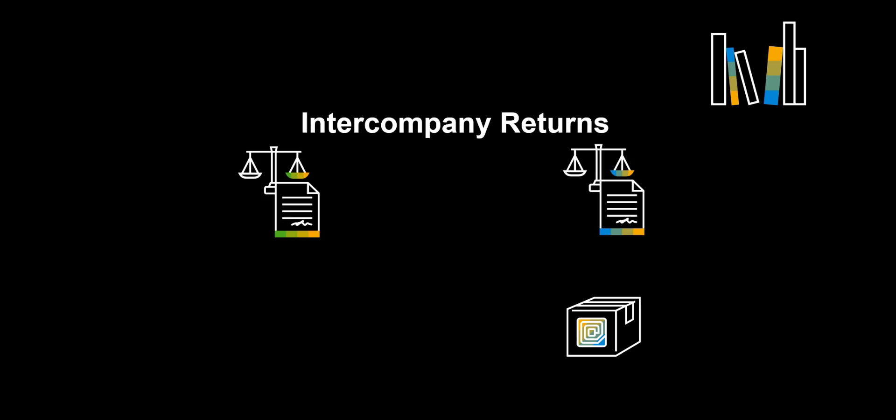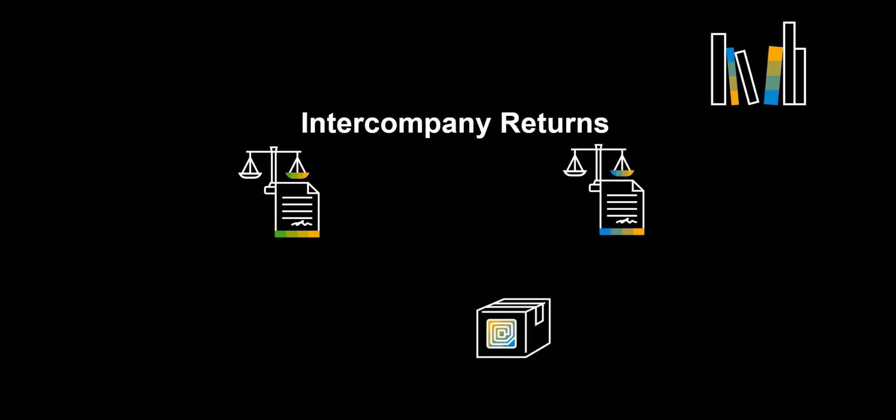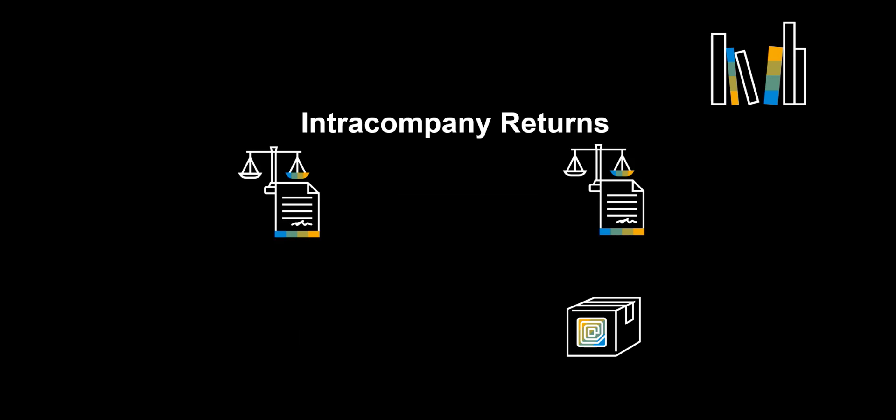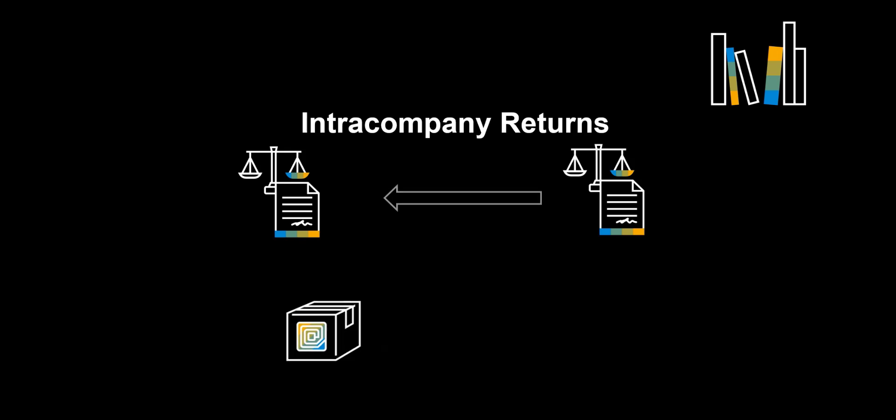Before we turn to the system demo, we will examine a few keywords. An intercompany return is a return conducted between two or more affiliates or business units of the same parent company. The intercompany return is conducted between companies in the group, which are different legal entities. Intracompany returns are returns which take place among two entities that exist within one company, resulting in an internal accounting of the transaction, not to be confused with intercompany returns that take place between two or more legal entities, resulting in a legal transfer of prices.